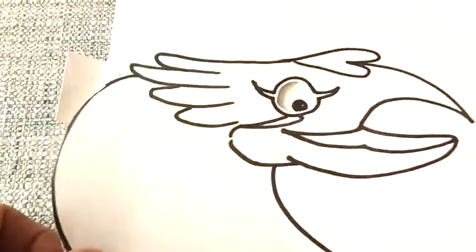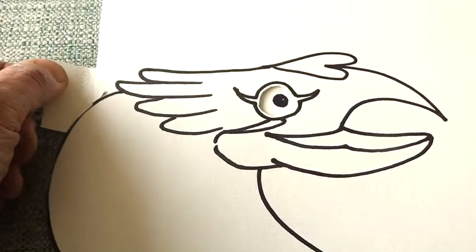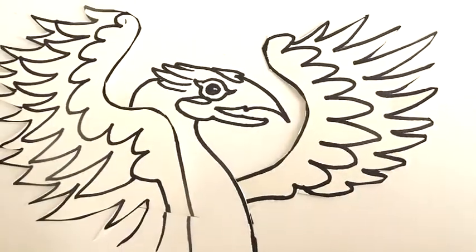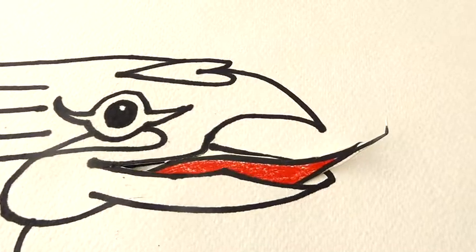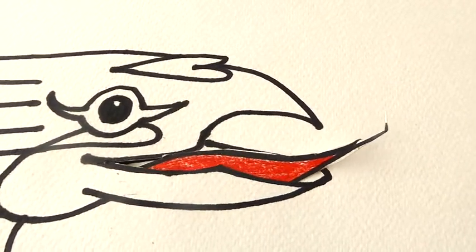But let's have some fun with it. So let's cut out a little hole and see if we can make the eyeball move, or the wings move, or the tongue. Just cut a slit in it and then stick something through.